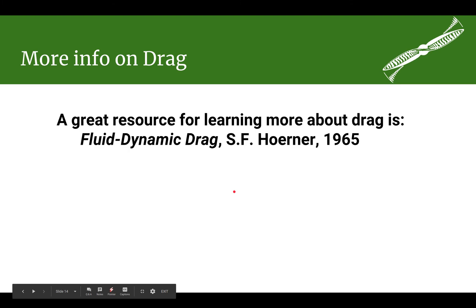This is where part one of the video on the coefficient of drag ends. The reference used in putting this video together is the book 'Fluid Dynamic Drag' by Sigurd Horner from 1965. If you do a careful web search you can actually find this online in PDF form. This reference will also appear in part two. In part two we will start talking about combining friction drag and pressure drag into various forms of parasitic drag and how to use those coefficients, and then we'll also talk about the induced drag coefficient.